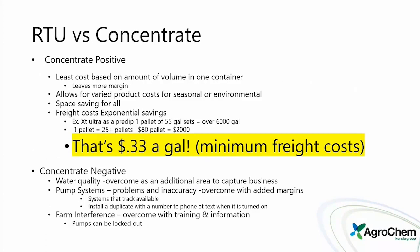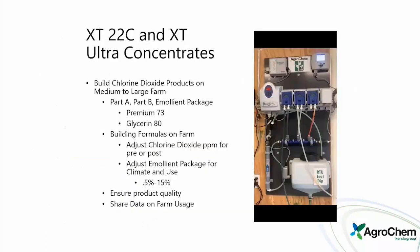Concentrate negatives: water quality can be an issue, but can be overcome by treating the water. Pump system inaccuracies on the dairy are a concern, but can be addressed with tracking systems, duplicate systems, and full automation. Farm interference — people pushing buttons — can be overcome with training and lockout-capable systems. XT22C and XT Ultra concentrates are well-suited for these automated approaches.